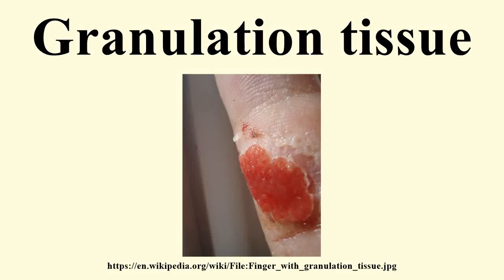Granulation tissue is new connective tissue and tiny blood vessels that form on the surfaces of a wound during the healing process. Granulation tissue typically grows from the base of a wound and is able to fill wounds of almost any size. Examples of granulation tissue can be seen in pyogenic granulomas and pulp polyps.